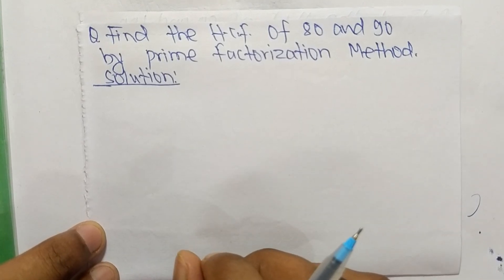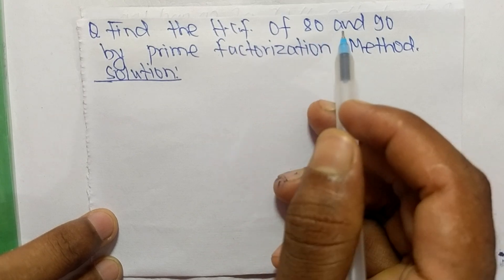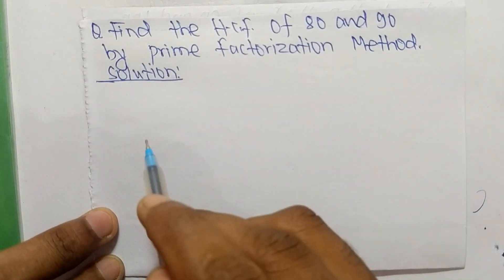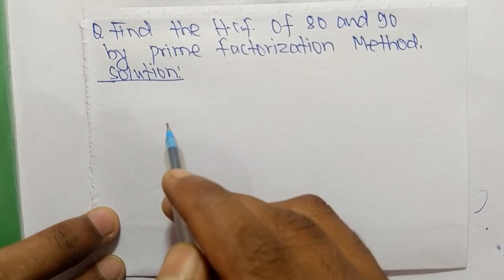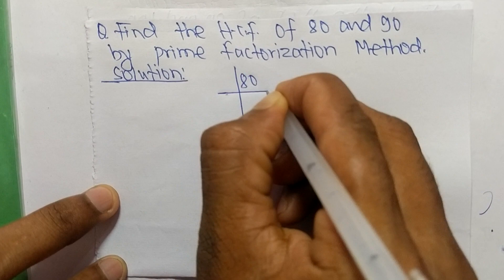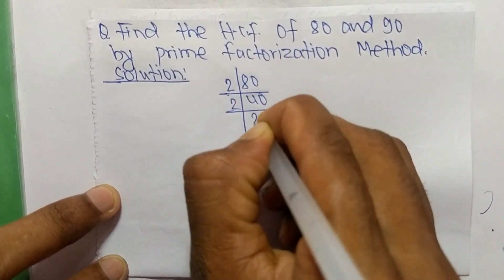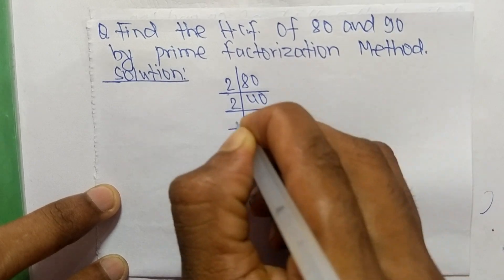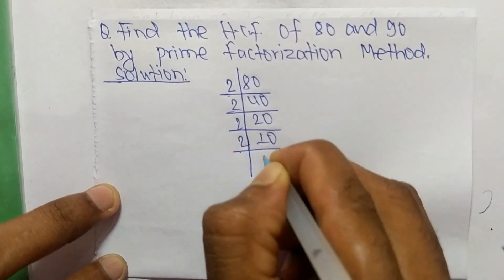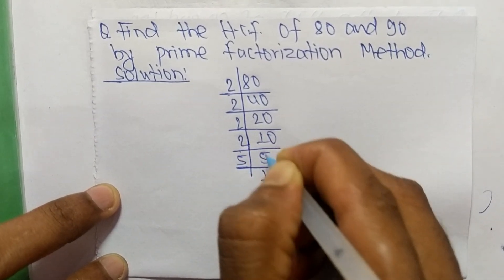Today we shall learn to find the HCF of 80 and 90 by the prime factorization method. First, we find the prime factors of 80: 2 times 40 equals 80, 2 times 20 equals 40, 2 times 10 equals 20, 2 times 5 equals 10, and 5 times 1 equals 5.